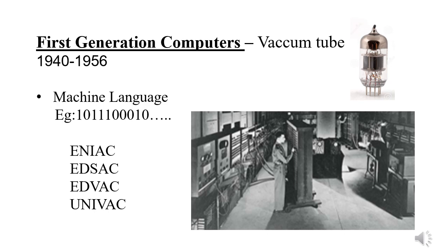These computers, which are taller than the average human, required people to work around them. Due to their large size, the price was also high. They could not be moved and consumed a lot of electricity. The amount of heat generated was also high, causing these computers to frequently break down. Also, the output received was sometimes incorrect and took a long time to process.